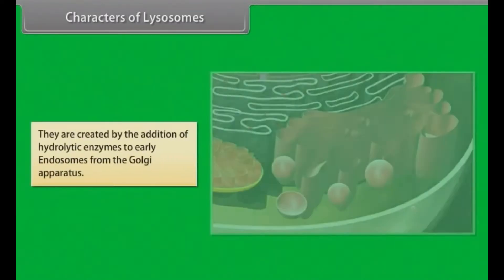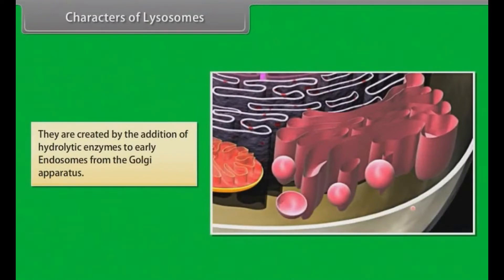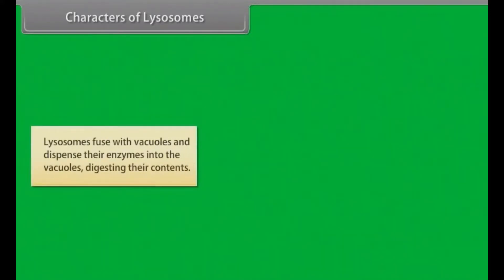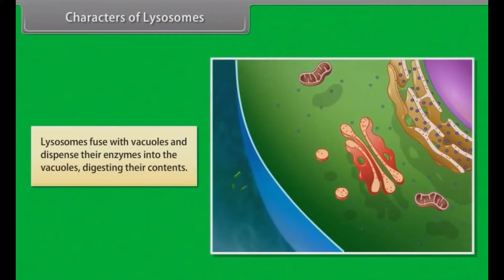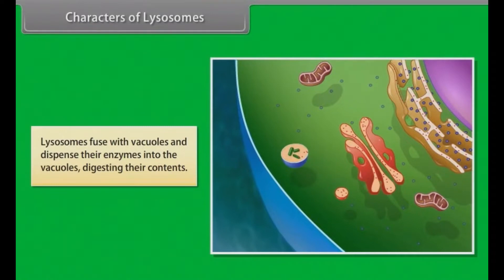Lysosomes are created by the addition of hydrolytic enzymes to early endosomes from the Golgi apparatus. Lysosomes fuse with vacuoles and dispense the enzymes into the vacuoles, digesting their contents.